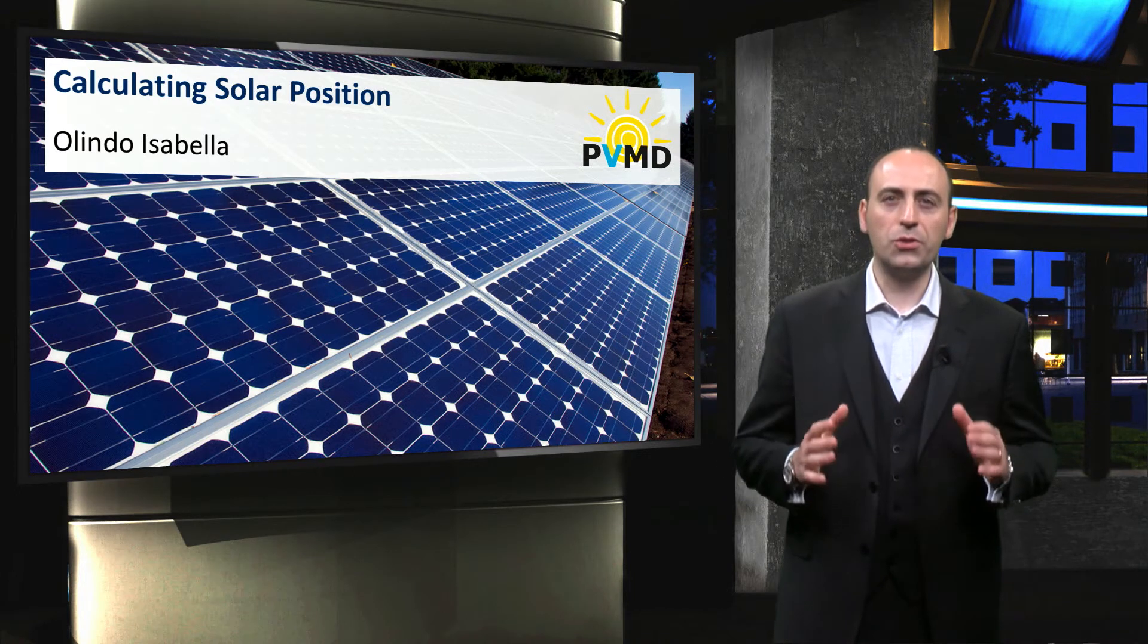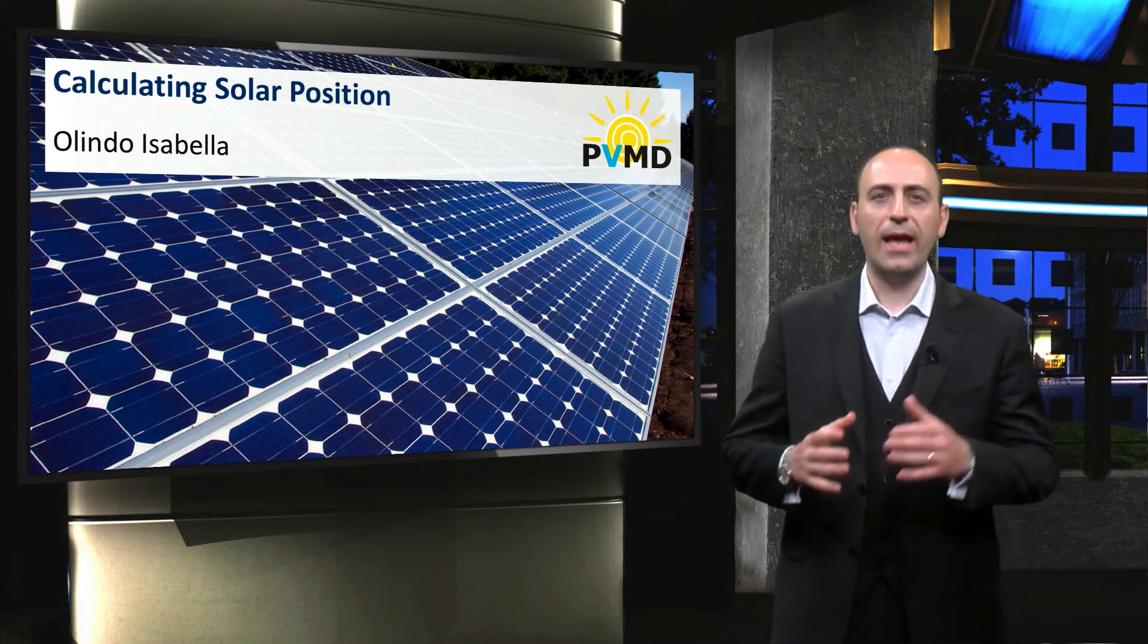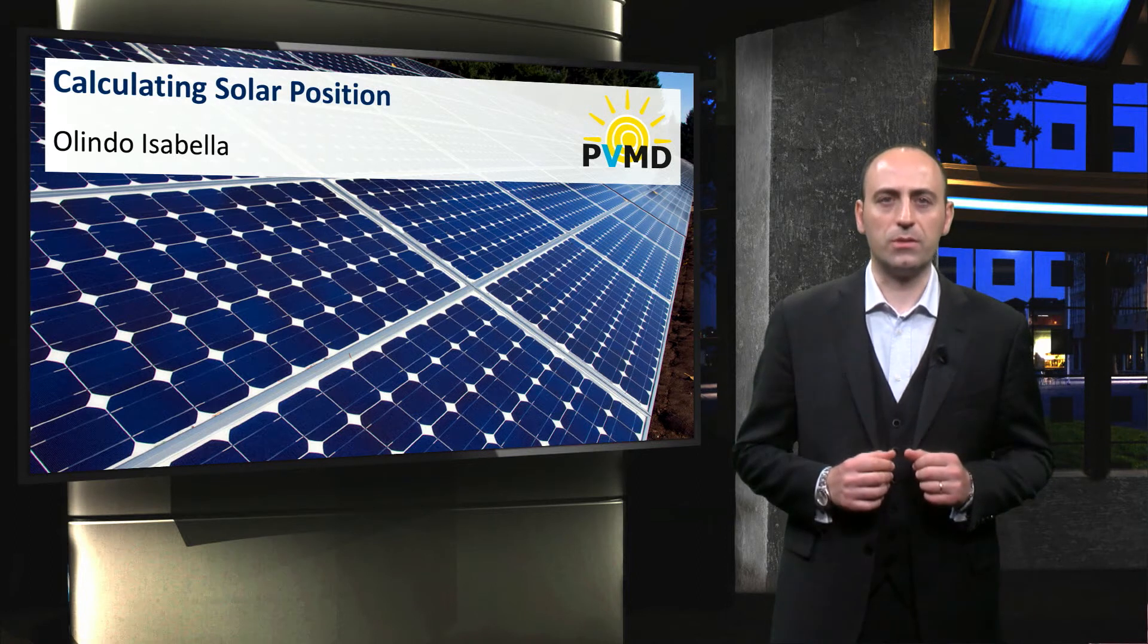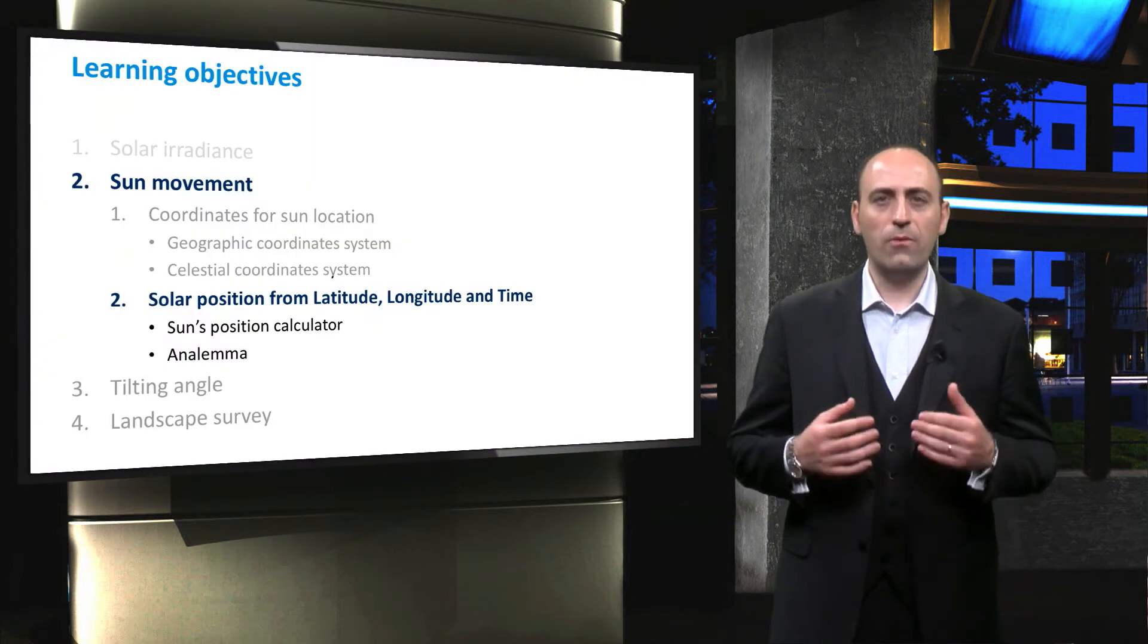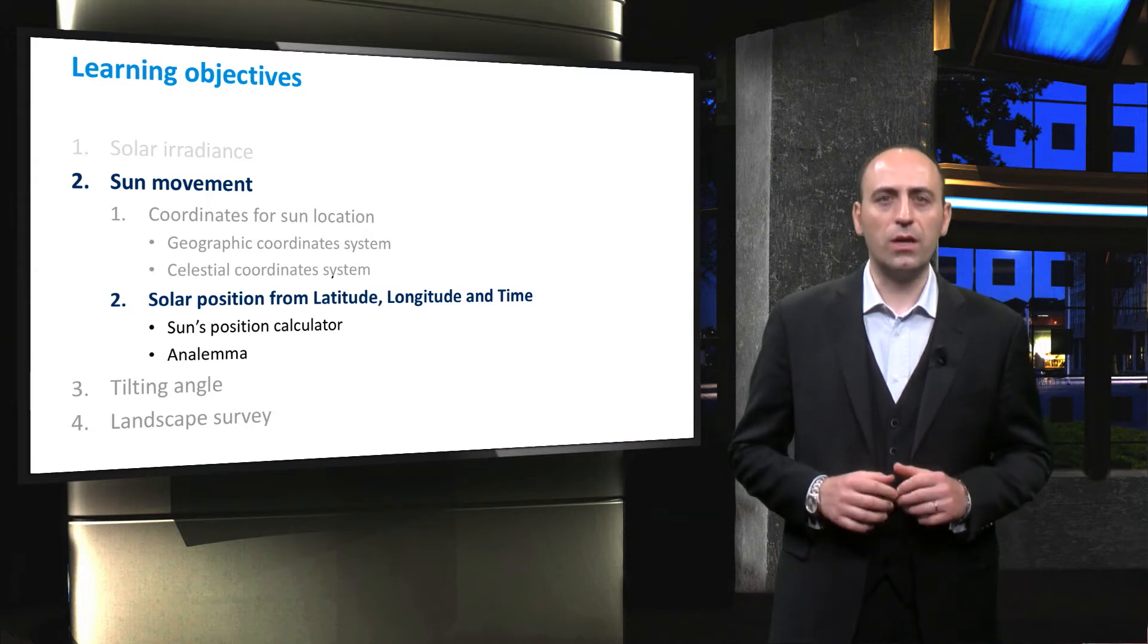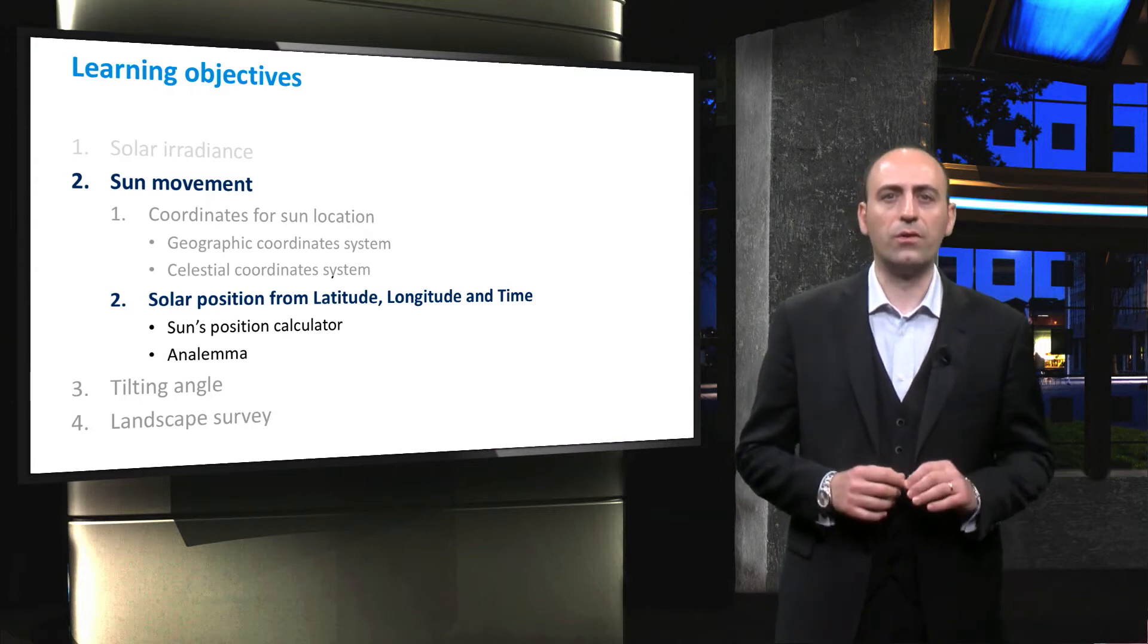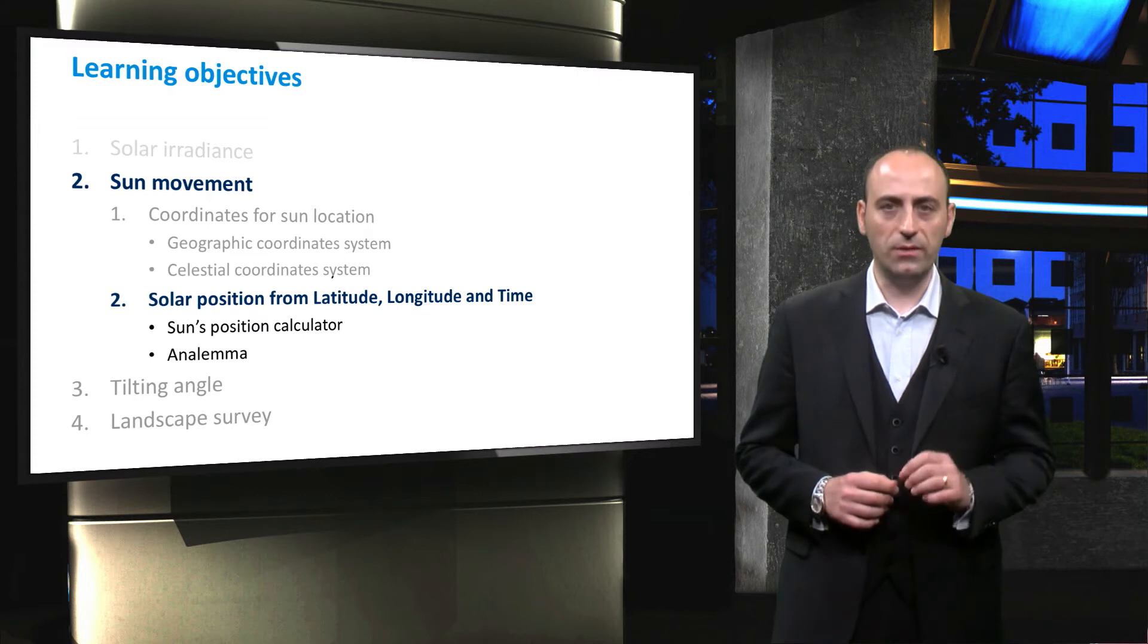In the previous lecture we introduced both the geographical and the celestial coordinate systems. And now, we are ready to calculate the position of the Sun for a specific location on Earth at any given time and date.